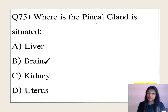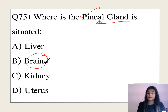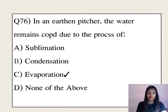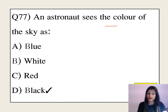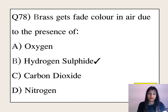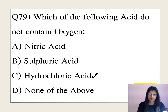Where is the pineal gland situated? It is situated in the brain. In an earthen pot, water remains cold due to the process of evaporation. An astronaut sees the color of the sky as black.